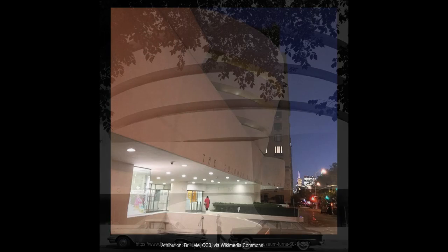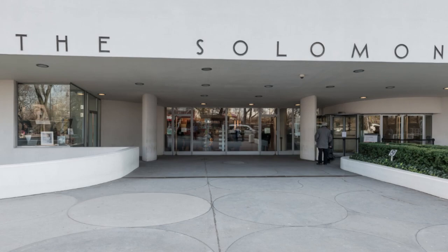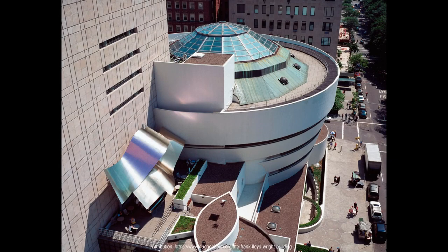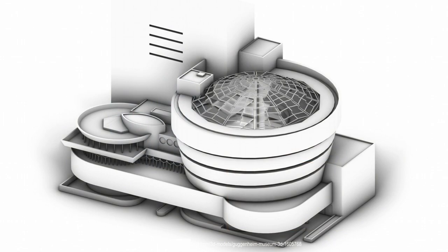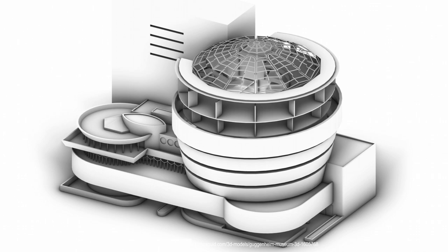The main entrance to the museum is located at street level and is marked by simple circular accents. The circle motif carries throughout the museum and is visible on both the interior terrazzo floor and concrete sidewalk outside. This entrance leads to the museum's central atrium, which serves as the hub of the building and provides access to the various galleries and exhibition spaces. The entrance is surrounded by a series of balconies and terraces, which provide visitors with panoramic views of the city and offer additional space for exhibitions and events. These outdoor spaces also serve to create a strong connection between the museum and its surrounding urban environment, helping to reinforce the building's role as a cultural landmark.